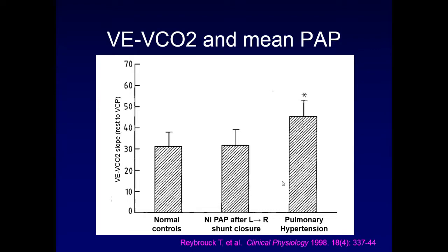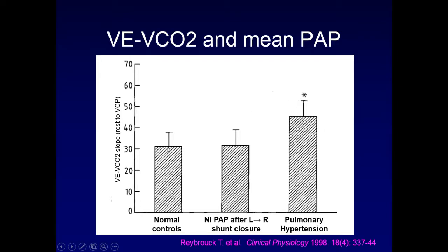This finding is unique to individuals with legitimate pulmonary hypertension that doesn't resolve. In a study by Ray Brook, they compared normal controls, patients with pulmonary hypertension associated with a left-to-right shunt who then had it closed, and patients with established pulmonary hypertension. Individuals who normalized their pulmonary pressures were vastly different from those with persistent pulmonary hypertension.